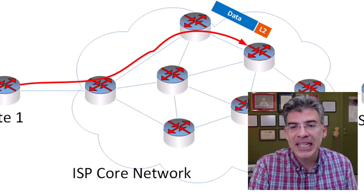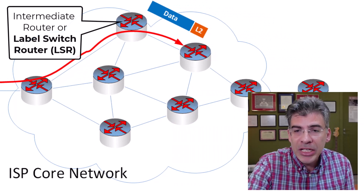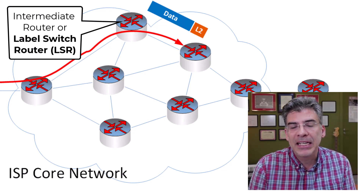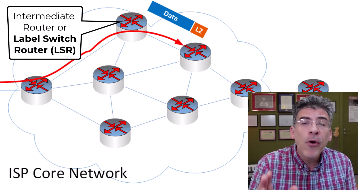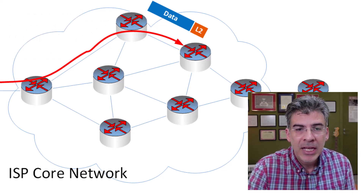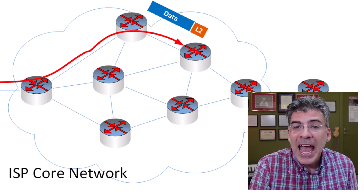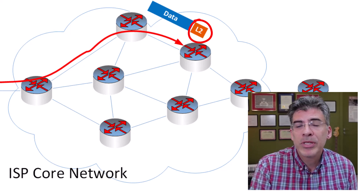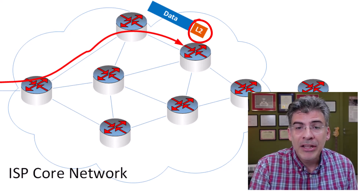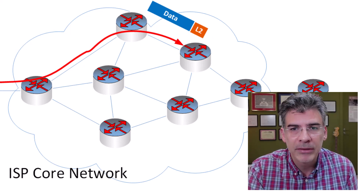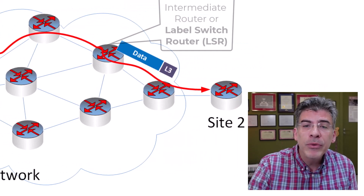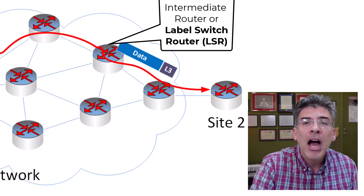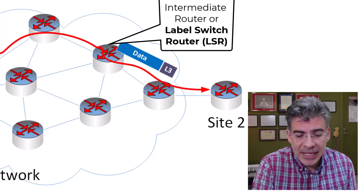As the packet traverses the MPLS network, each intermediate router that it reaches, known as a label switch router, or LSR, examines only the label attached to that packet. It doesn't examine the full IP header, and it makes forwarding decisions based only on that label. That label determines the next hop for the packet, and it may be replaced with a new label for the next segment of its journey. Here on this second router, the label was swapped from L1 to L2. This process of swapping labels is known as label swapping, and it continues for every router encountered within the core of the MPLS network.